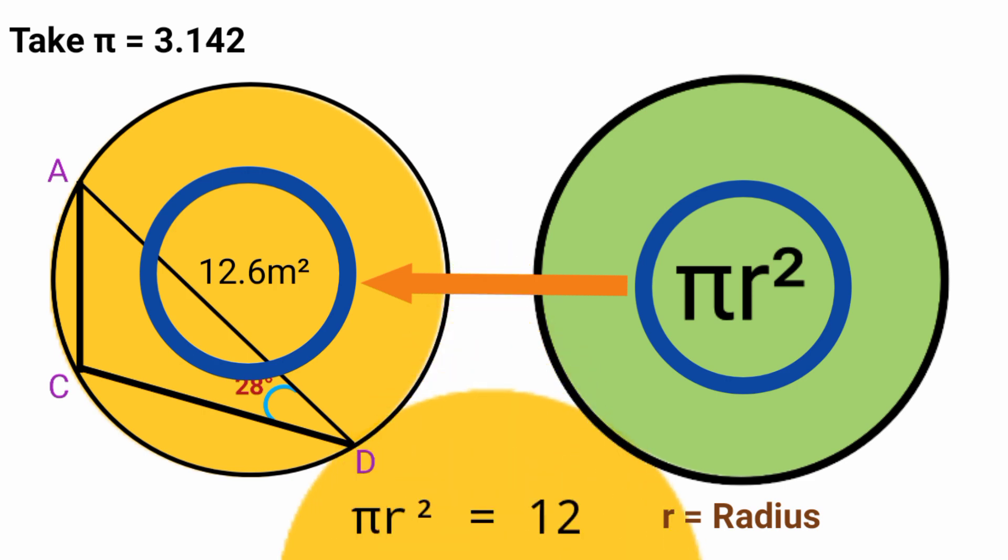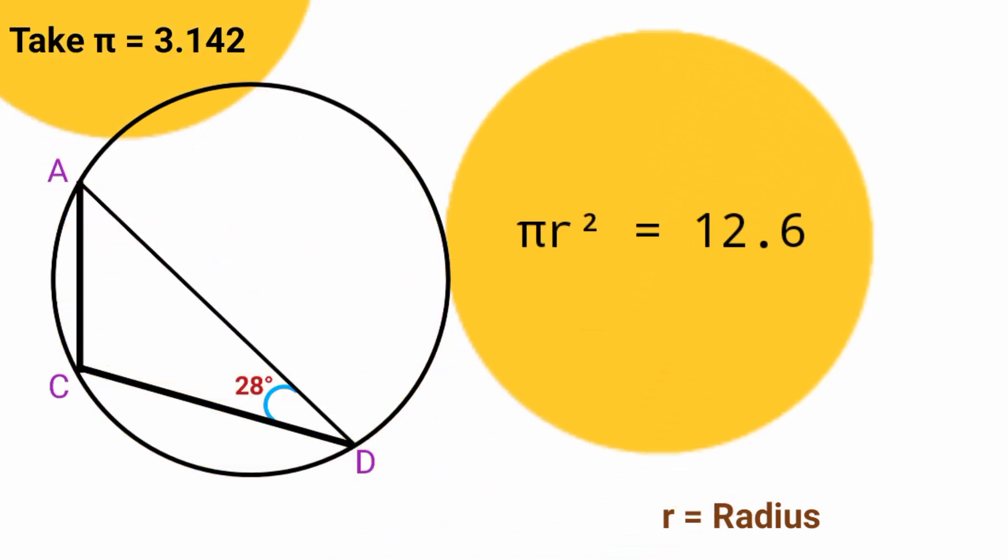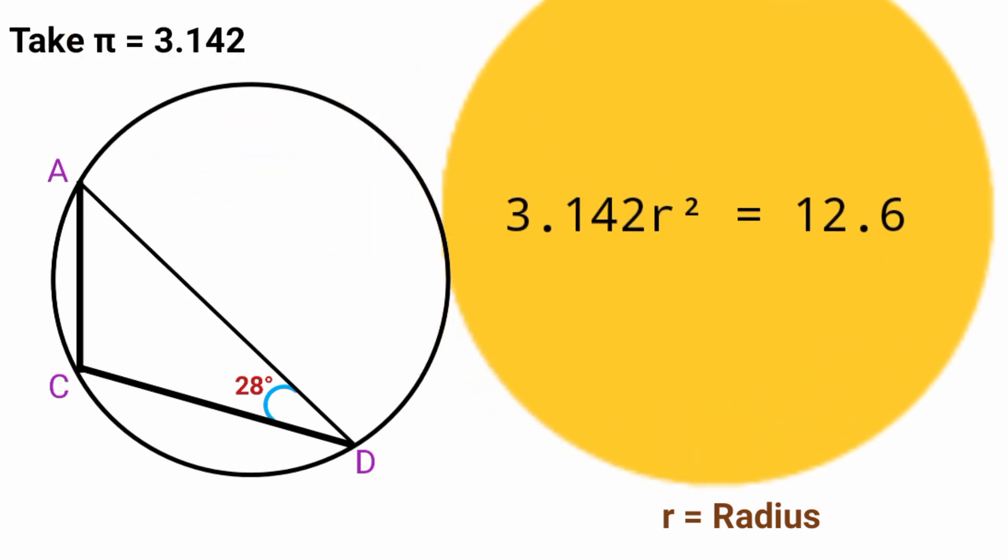So we're going to have πr² equal to 12.6. But if you look here they said π equals 3.142, so we can substitute it into the equation. Now you're having 3.142r² equal to 12.6. Dividing both sides by 3.142, this 3.142 will cancel 3.142. And here 12.6 divided by 3.142 using your calculator is equal to 4.01. So r² is equal to 4.01.